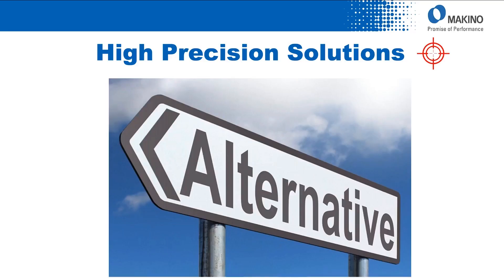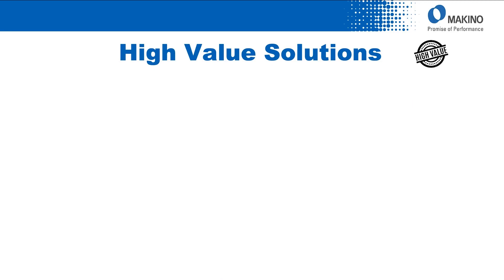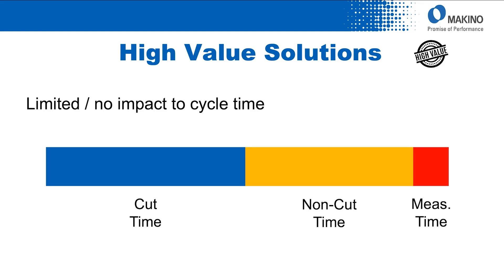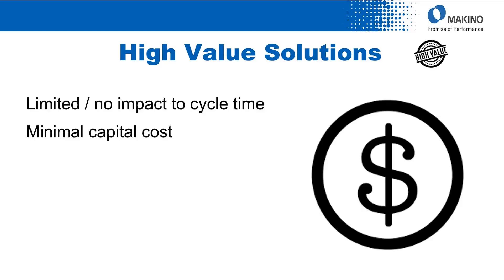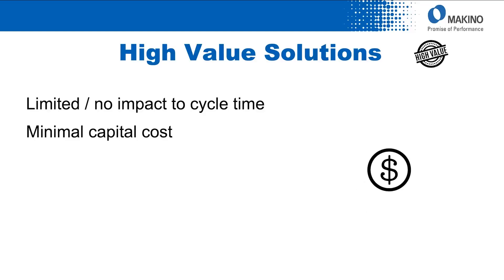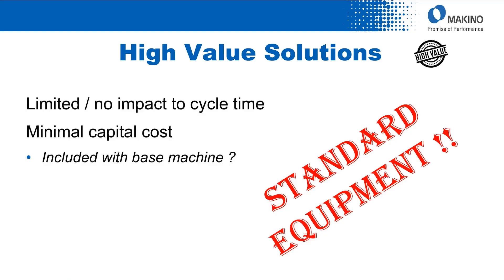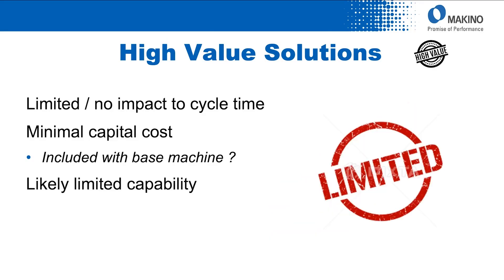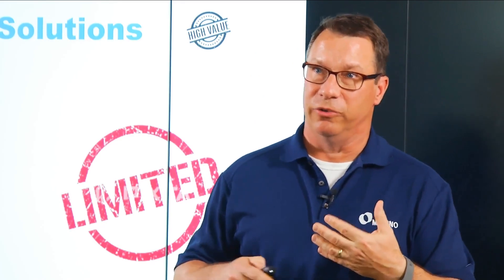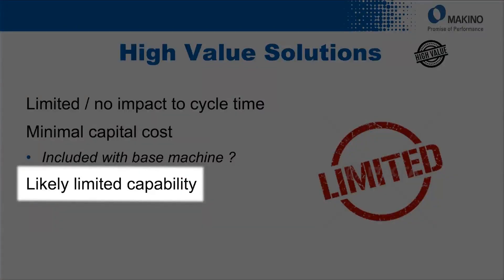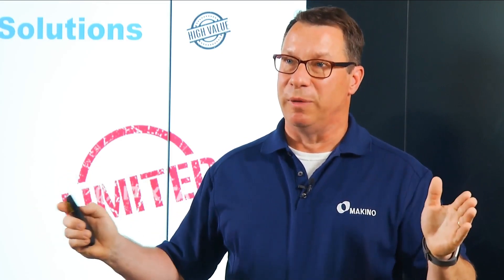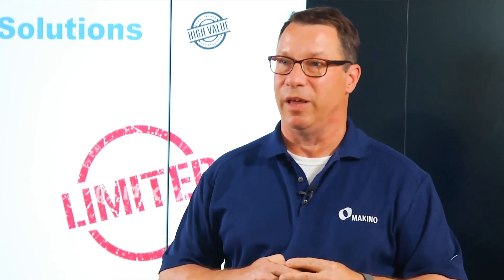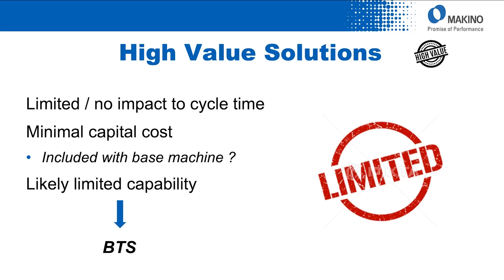Let's look at some alternatives to the high precision solution — the high value alternatives. The focus here is really on limited to no impact to the overall cycle time: eliminate that measurement time completely, but still get the data you need to add process control to the overall solution. In addition, minimization of capital cost — a simpler system, or maybe even a system that's standard with the base machine. However, with the high value solutions, capability is very limited relative to the high precision solutions, much more limited data — really giving you the ability to detect a broken tool. Broken tool sensing (BTS) is going to be the data you're often limited to in this case.